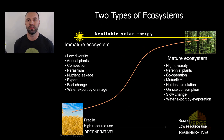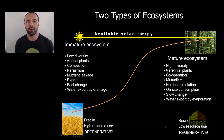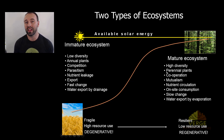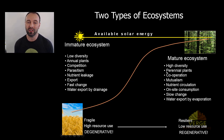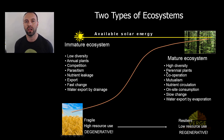One more comparison gets to the heart of this issue: an immature ecosystem versus a mature ecosystem. The industrial system is very immature, and permaculture aims to create a human system that mimics a mature ecosystem. Immature ecosystems generally have low diversity, are based in annual plants, competition, parasitism, nutrient leakage, export, fast change, and water export by drainage — perfectly described by a monoculture wheat, canola, or corn crop.